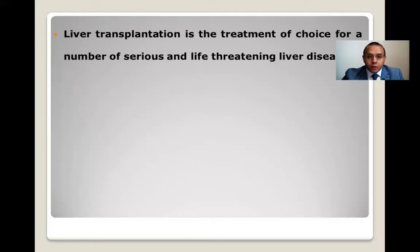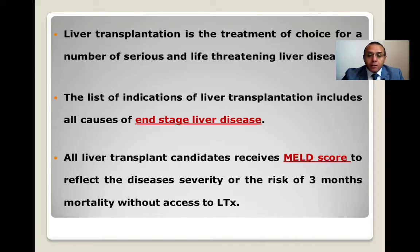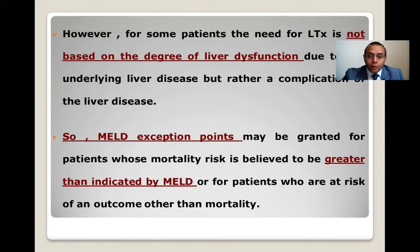Liver transplantation is the treatment of choice for a number of serious and life-threatening liver diseases. The list of indications includes all causes of end-stage liver disease. All liver transplant candidates receive a MELD score to reflect disease severity and risk of three-month mortality without access to transplant. However, for some patients, the need for liver transplant is not based on the degree of liver dysfunction, but rather a complication of the liver disease. MELD exception points may be granted for patients whose mortality risk is greater than indicated by MELD score, or for patients at risk of a bad outcome other than mortality.